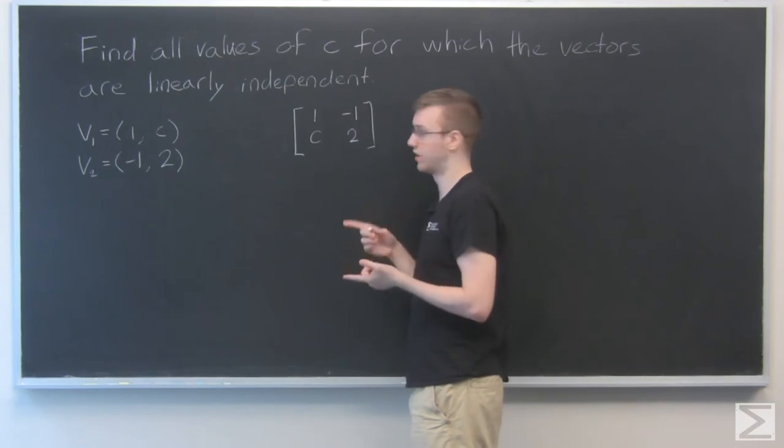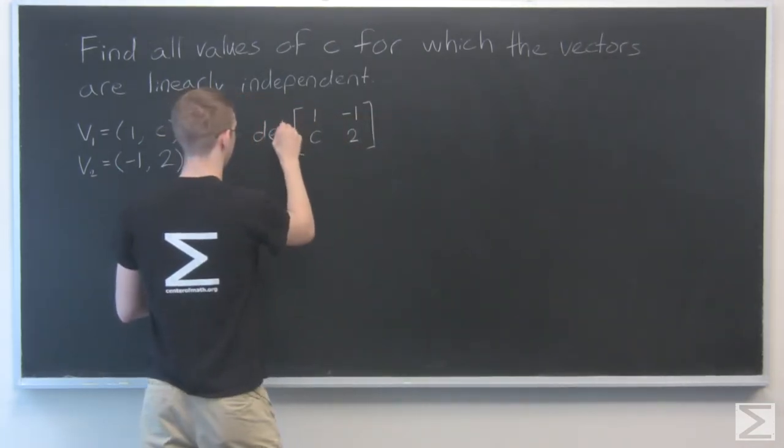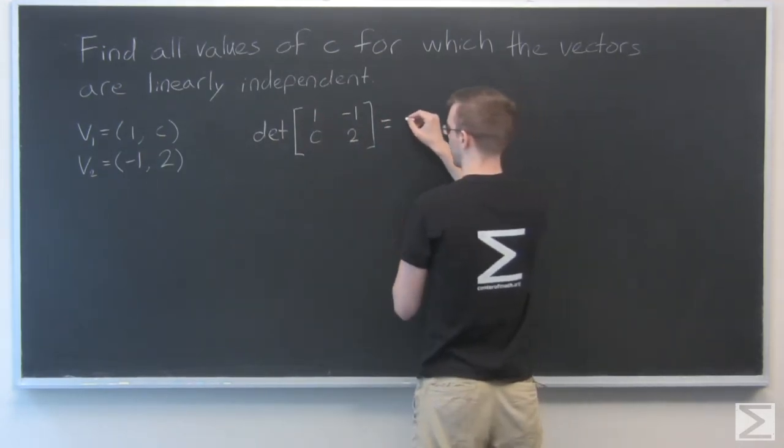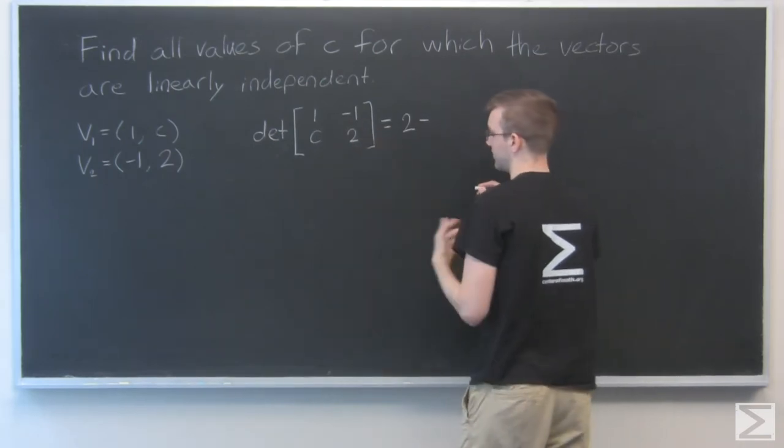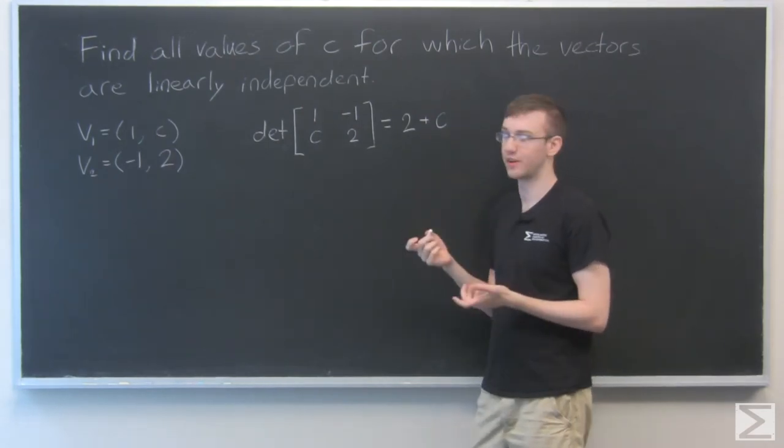Now let's find the determinant of this matrix. The determinant is going to be cross multiply: 1 times 2 is 2, and we subtract C times minus 1, and that's minus C, so plus C. That's our determinant.